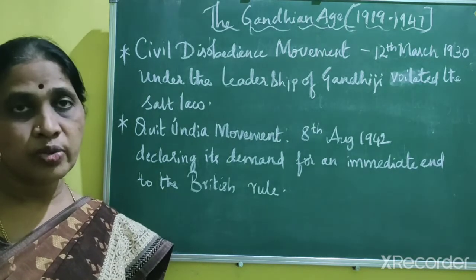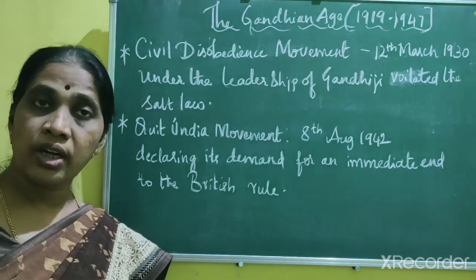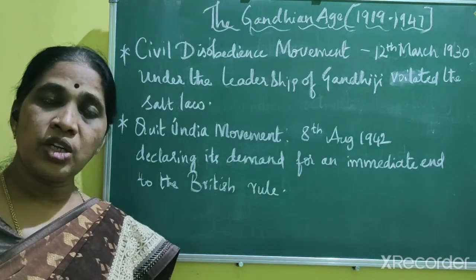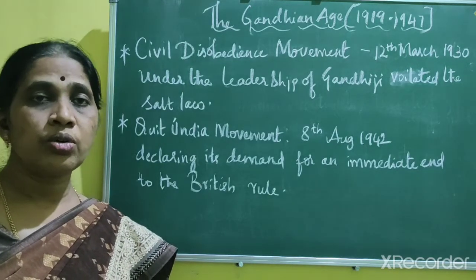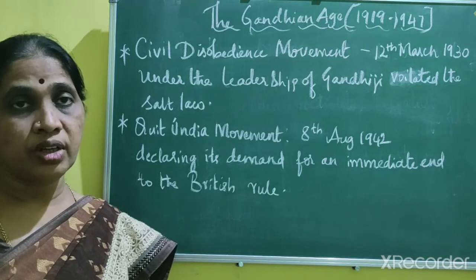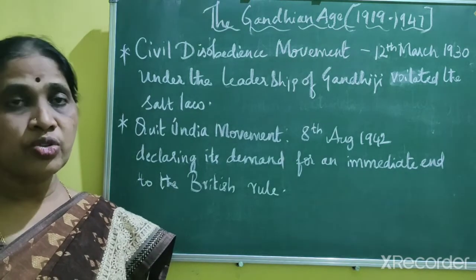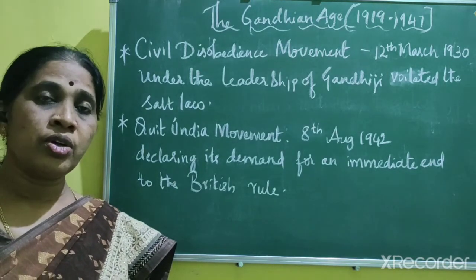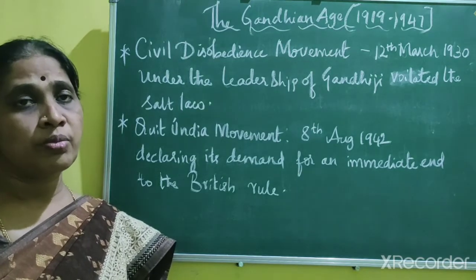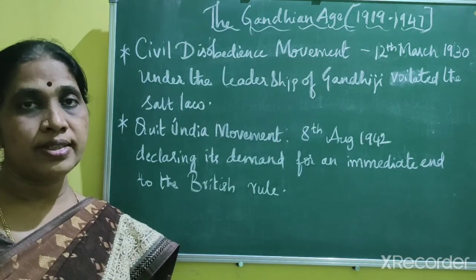In 1929, the Congress session was held at Lahore, presided over by Jawaharlal Nehru as President. In that meeting, it was decided that 26th January would be observed as Purna Swaraj Day. But even that was a failure. It was later decided that a Civil Disobedience Movement should be launched against the British.